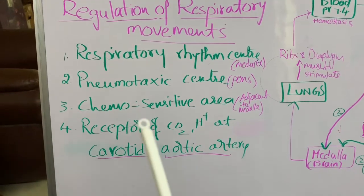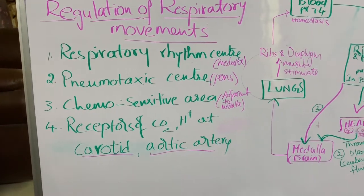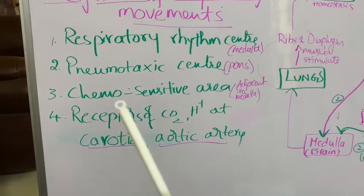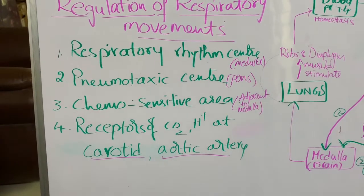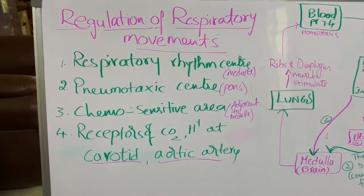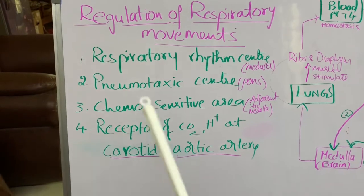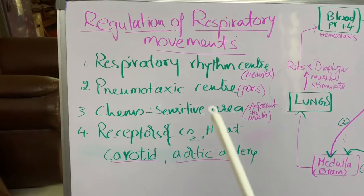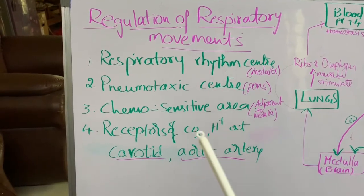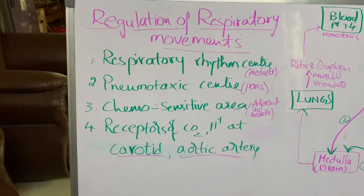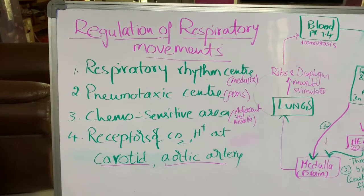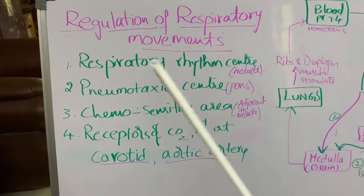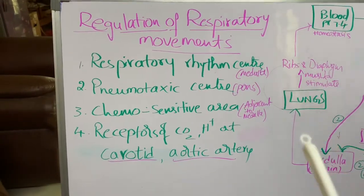The third one is the chemosensitive area, which is present adjacent to the respiratory rhythm center. This chemosensitive area is very sensitive to the concentration of carbon dioxide and H+ ions. If there is any increase in the concentration of CO2 and H+, this will be notified to the respiratory rhythm center to take the necessary adjustments to remove these excess substances from the blood.